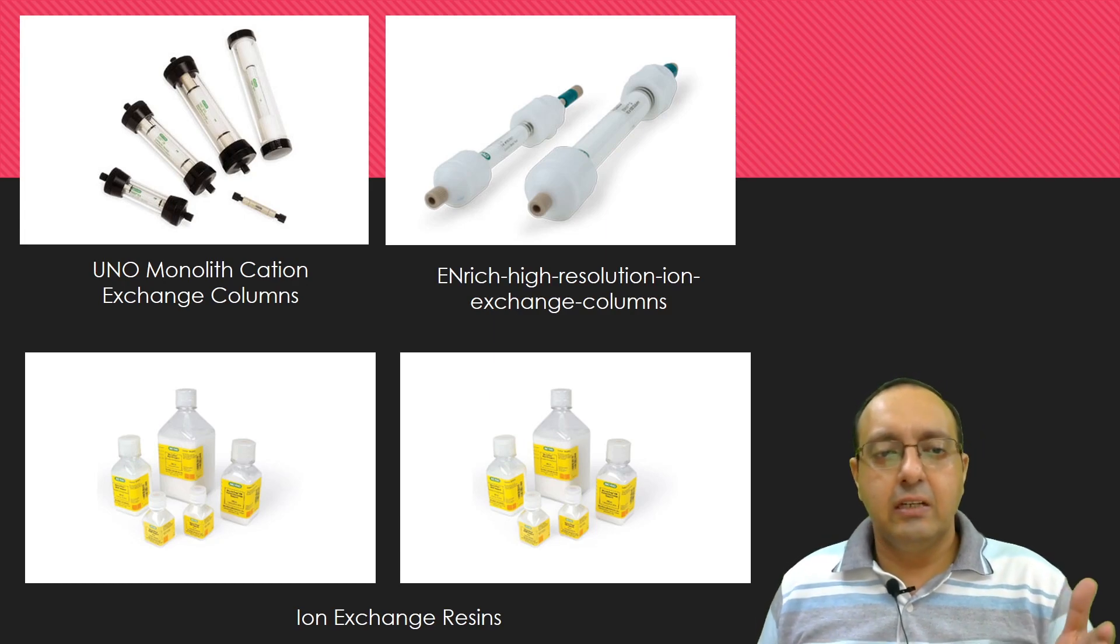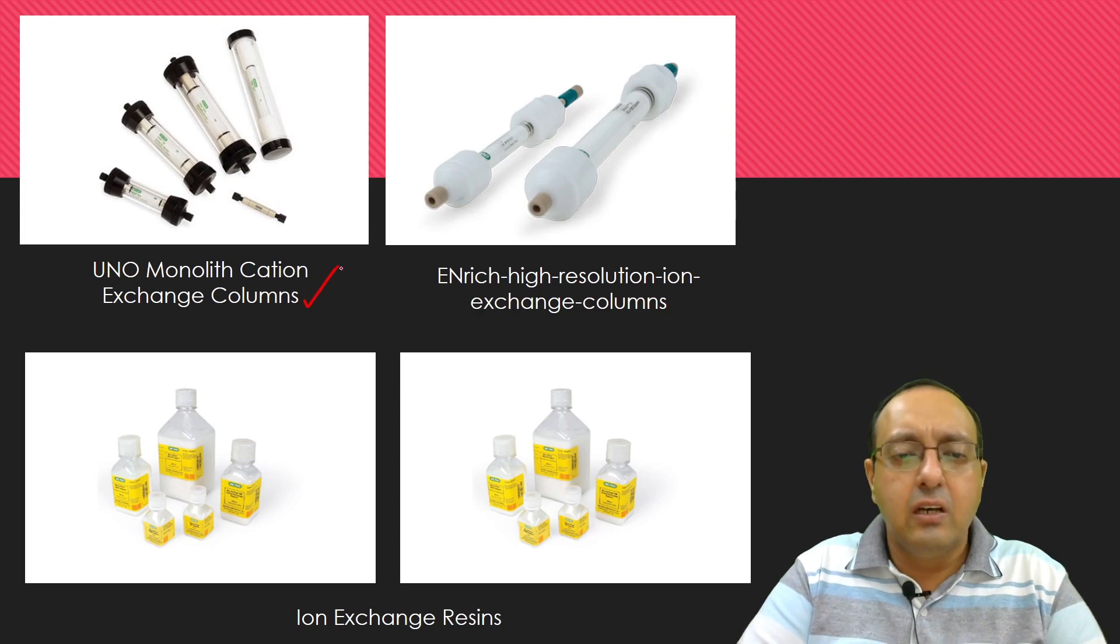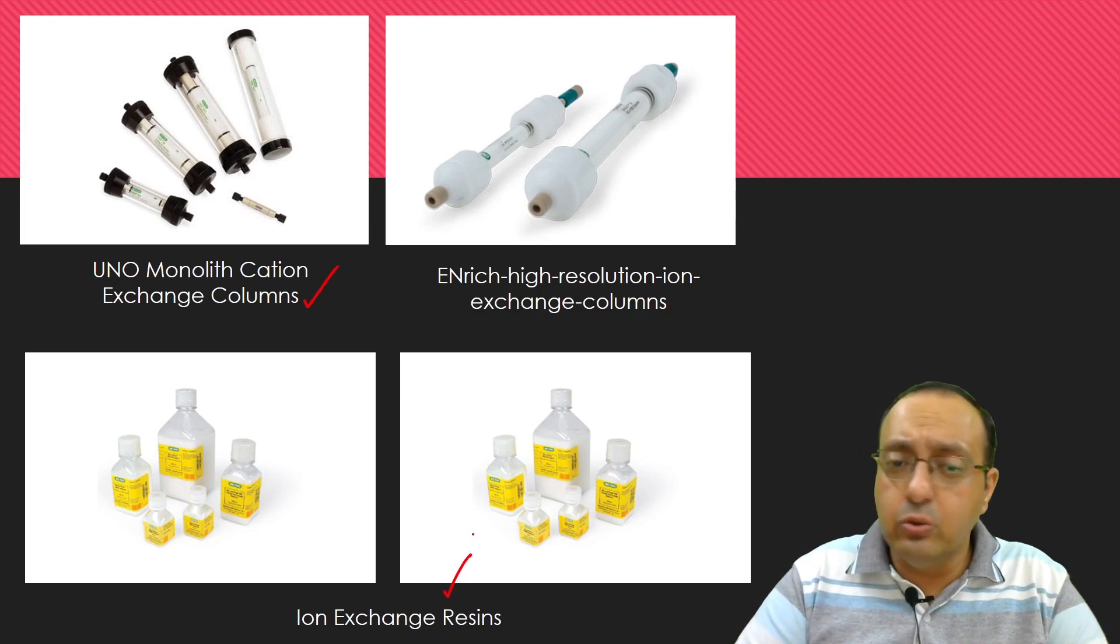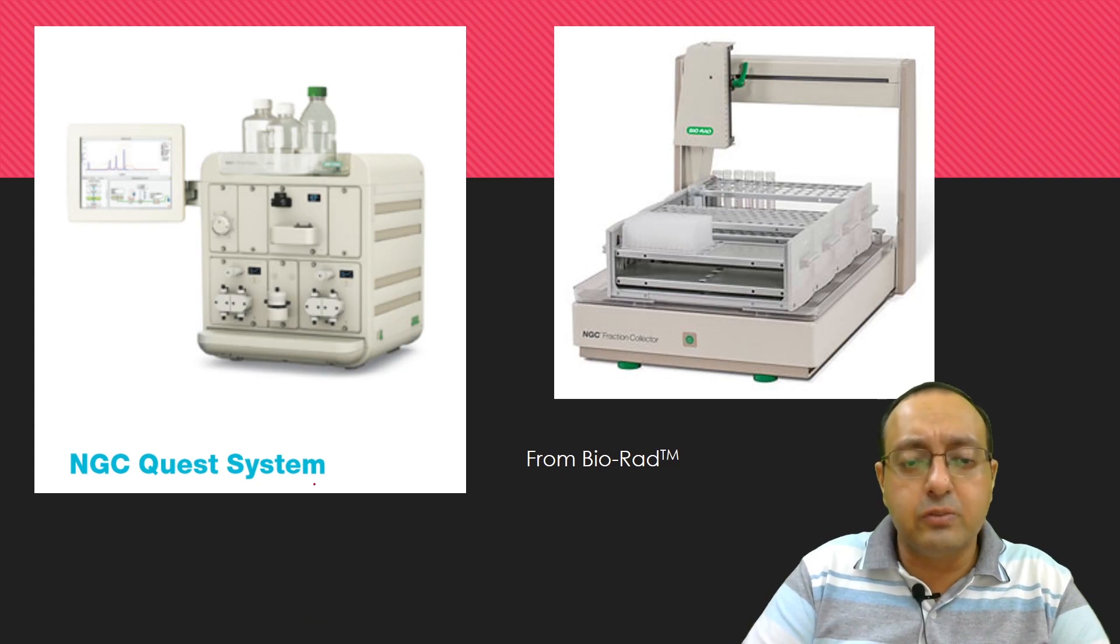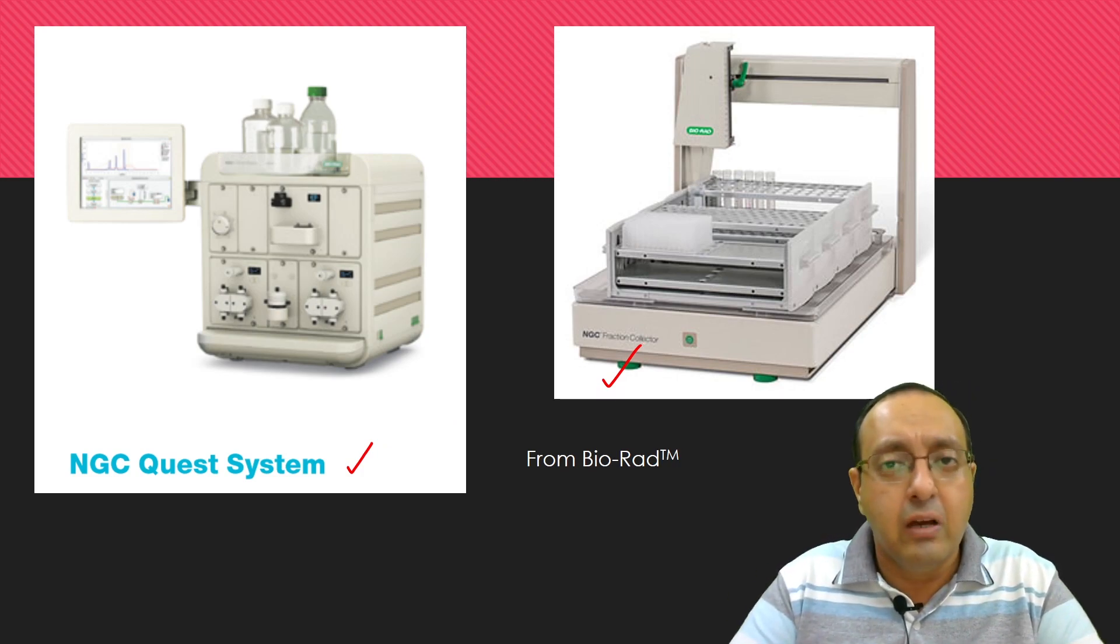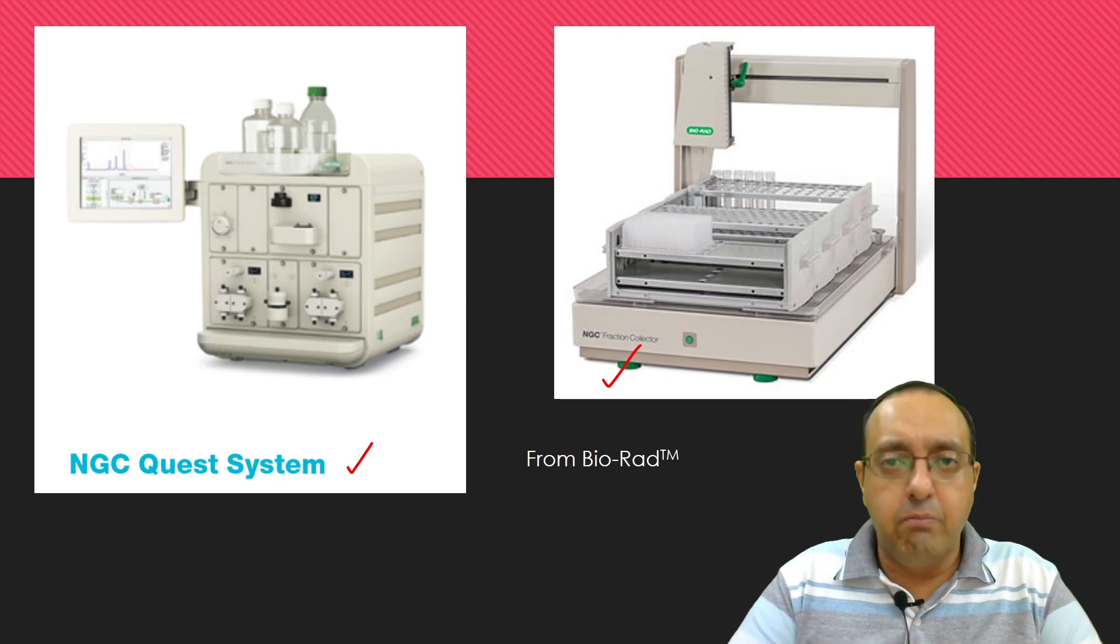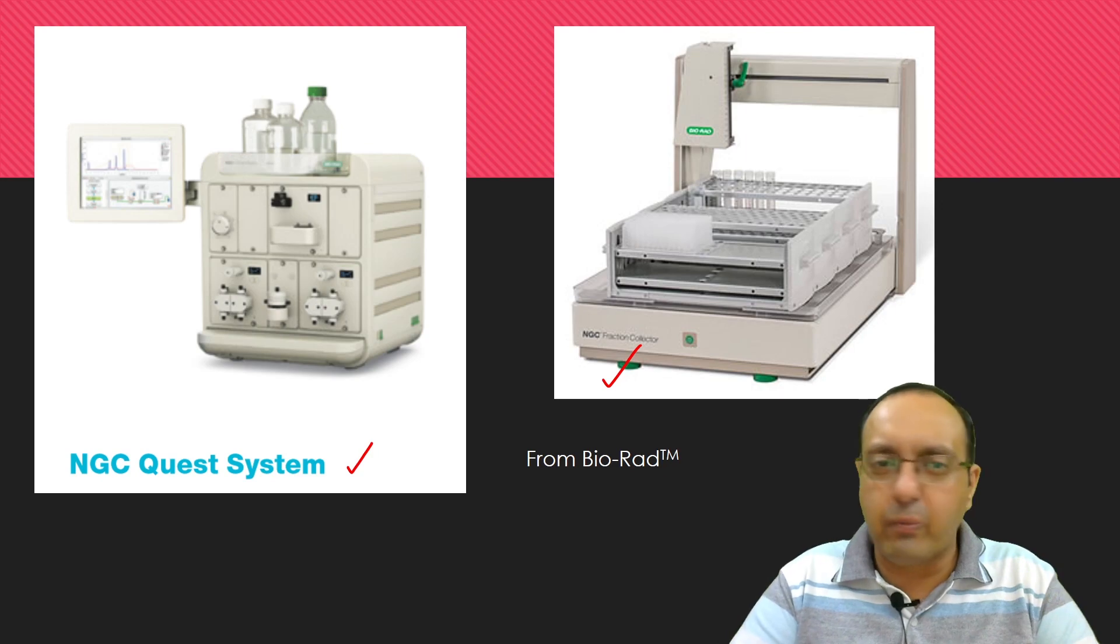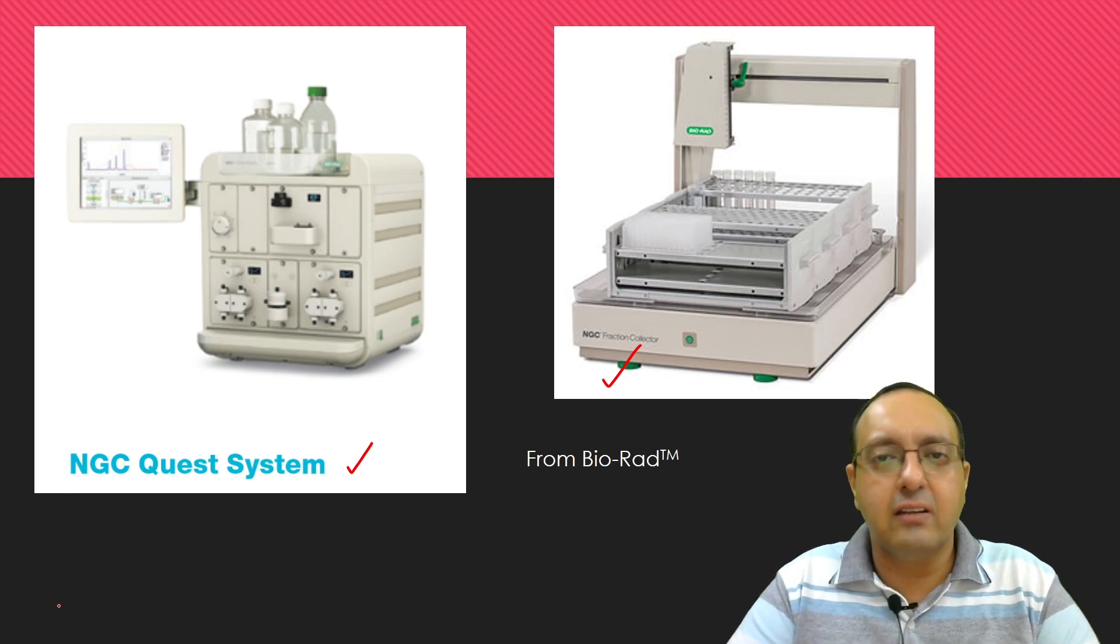For example, you can have these very nice exchange columns and ion exchange resins that we use and different systems. We have a complete system like this NGC Quest system along with fraction collectors from Biorad and similar equipments are available from other companies, which basically automate a lot of stuff and help you with protein purification. These are very sophisticated pieces of equipment. These cost thousands of dollars or lakhs of rupees. But the basic science behind them is fairly simple to understand.